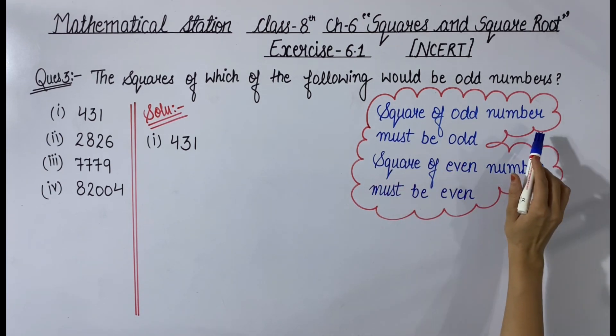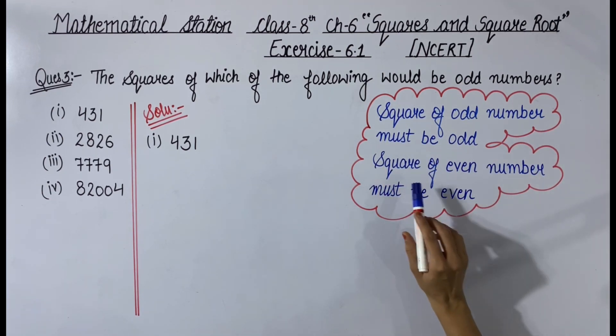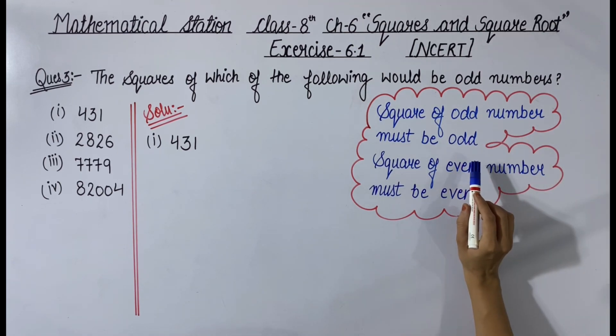See, the square of an odd number must be odd and the square of an even number must be even. This means an odd number's square is odd and an even number's square is even. This information will help us in solving the problem.